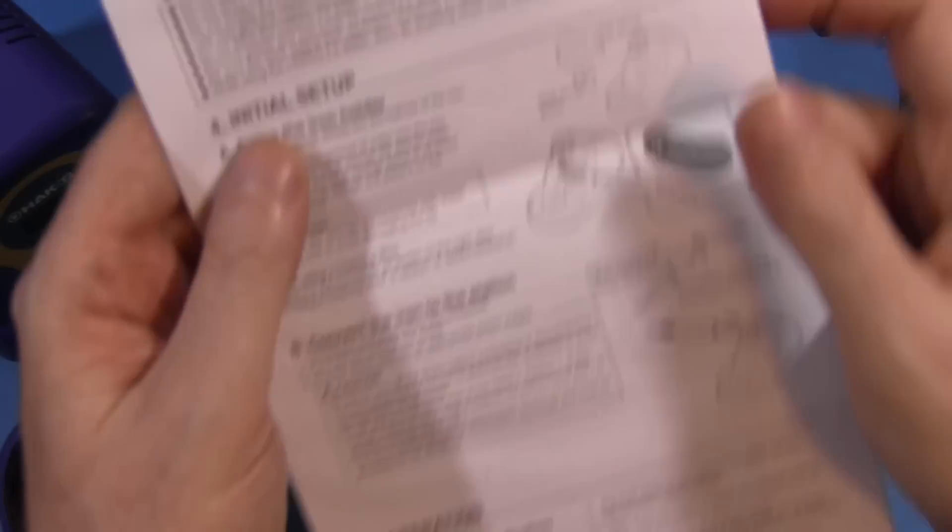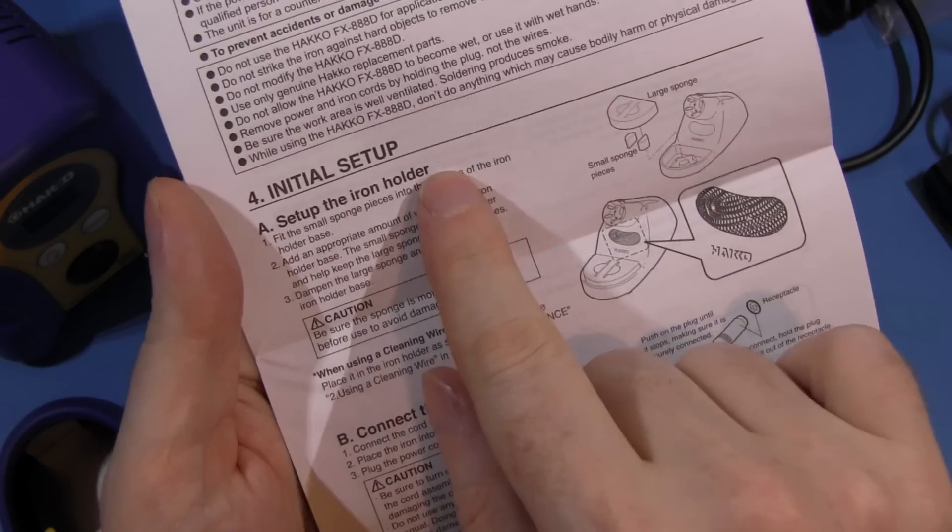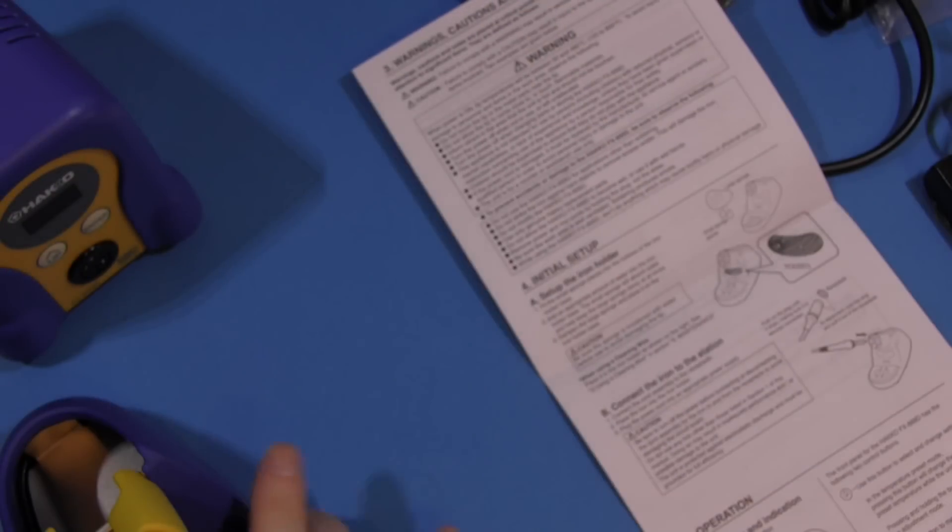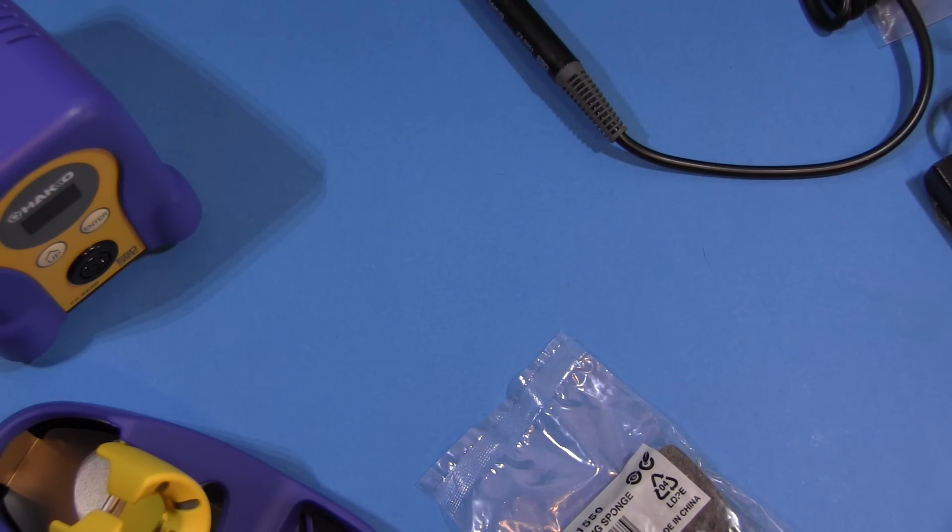Okay, let's get started. I've got my instructions here. Initial setup. Step A: set up the iron holder. So we've got to put the wire and the sponge thing in. Let's get to it.